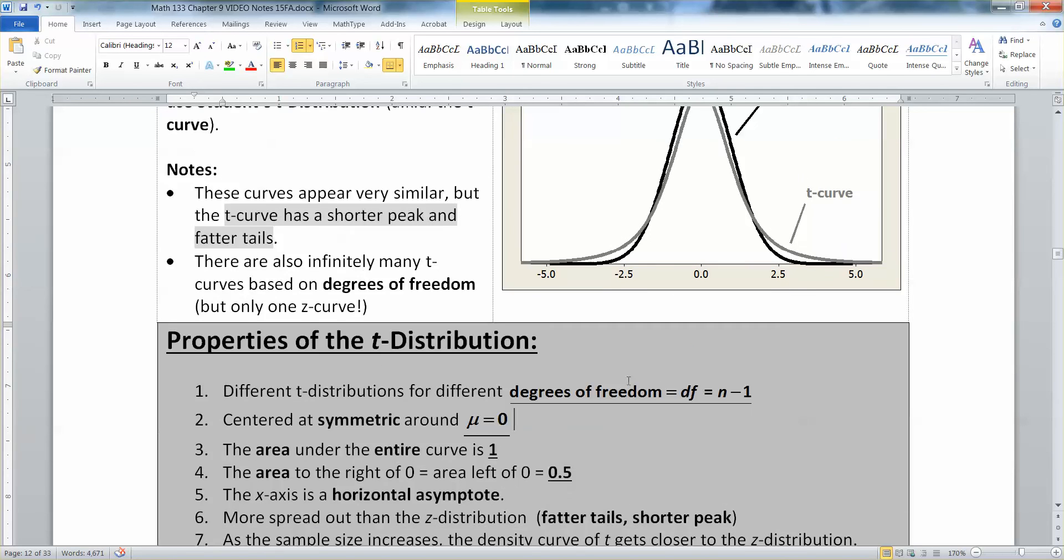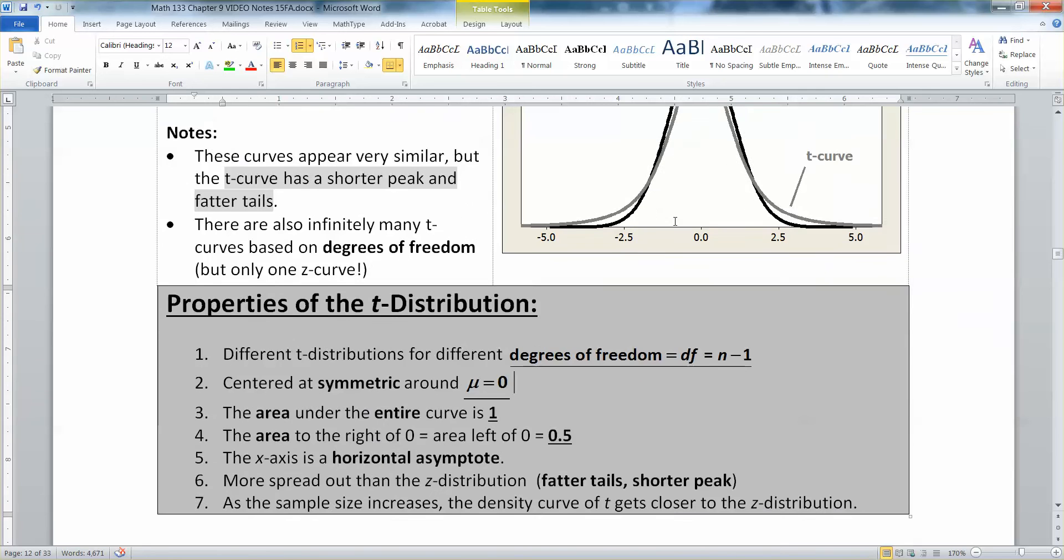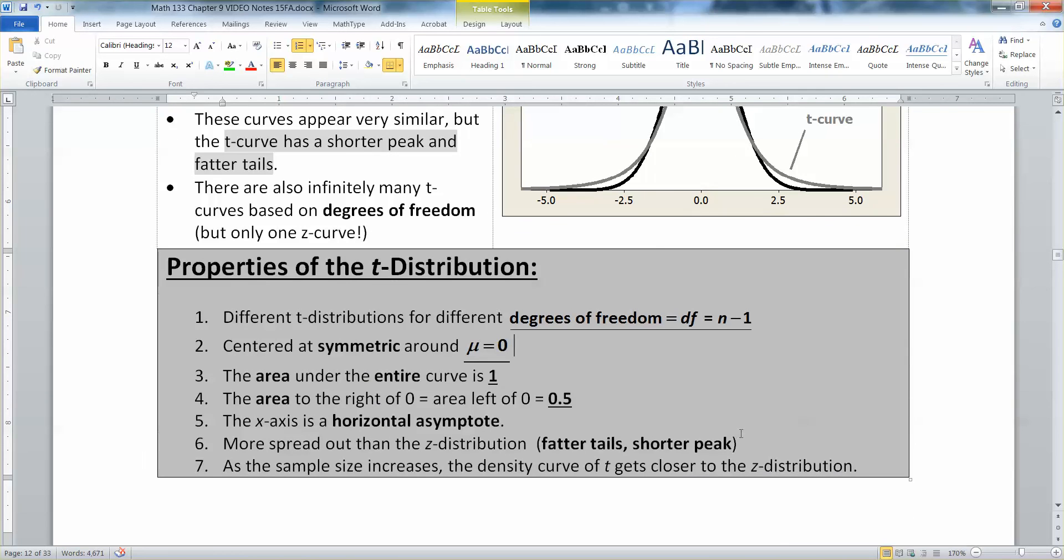It's going to be more spread out from your Z distribution. So it's going to have fatter tails, slightly taller, fatter tails, and a shorter peak in the middle. That's greater spread. In other words, the standard deviation is not one, it's something else.